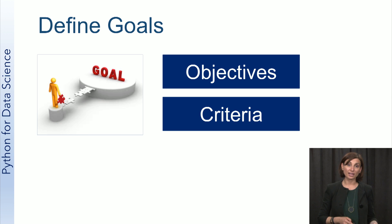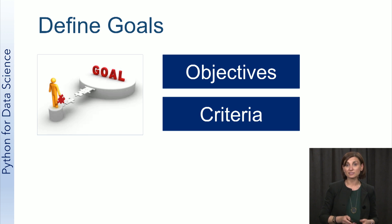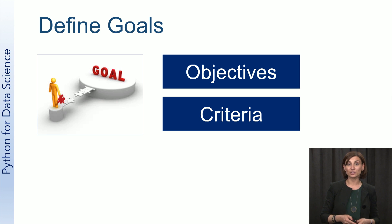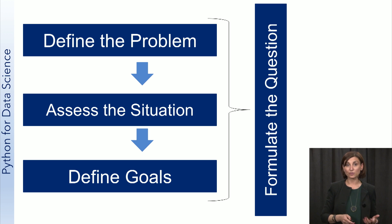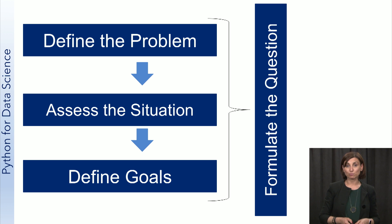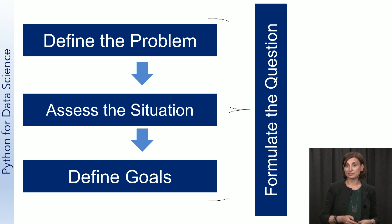Once you know the problem you want to address and understand the constraints and goals, you can formulate the plan to come up with the answer — that is, the solution to your business problem or the analytics you are trying to achieve. As a summary, defining the questions you are looking to find answers for is a huge factor contributing to the success of any data science project. By following the explained set of steps, you can formulate better questions to solve using analytical skills and link them to scientific and business value.